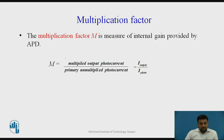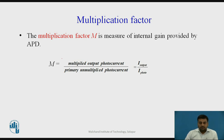The multiplication factor M is a measure of the internal gain provided by the avalanche photodiode. It is defined as the ratio of the multiplied output photocurrent to the initial, primary, unmultiplied photocurrent, given by I_output divided by I_photocurrent. It is a unitless quantity.